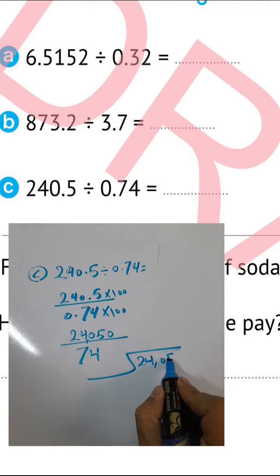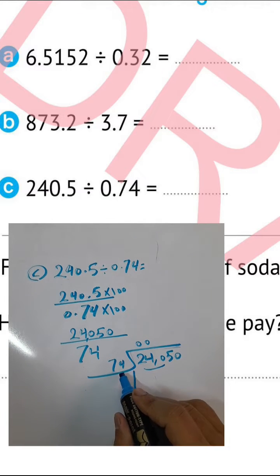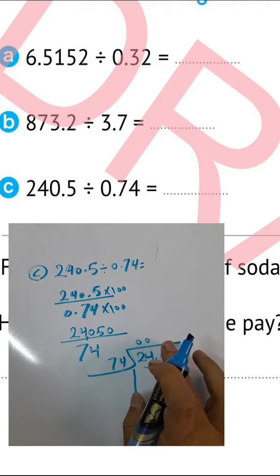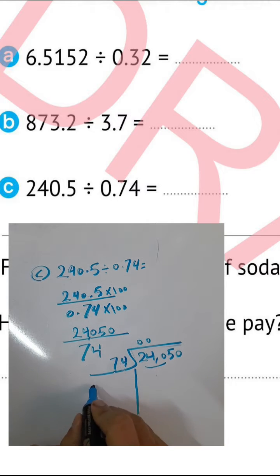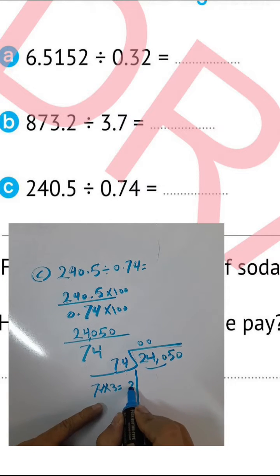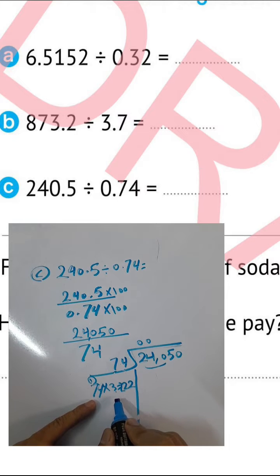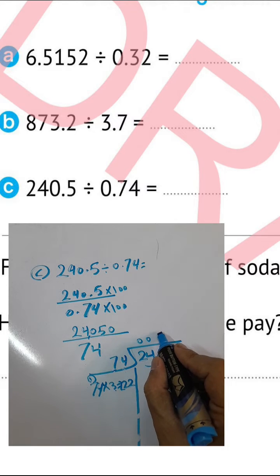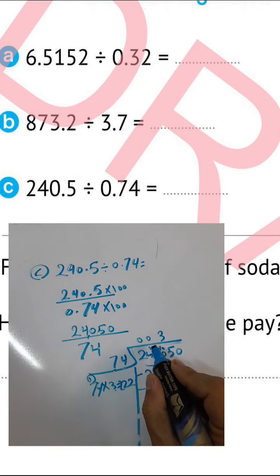240 divided by 74: digit by digit 24 divided by 7 gives 3. 74 times 3: 3 times 4 equals 12, write 2 carry 1; 3 times 7 equals 21, plus 1 equals 22 — giving 222. Write 3 outside. Find the difference: 240 minus 222 — 10 minus 2 equals 8, and 3 minus 2 equals 1 — giving 18. Drop 5 here.